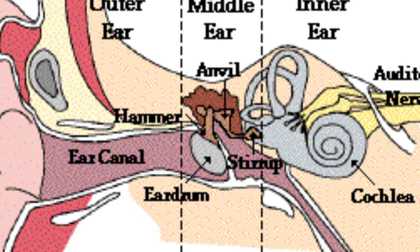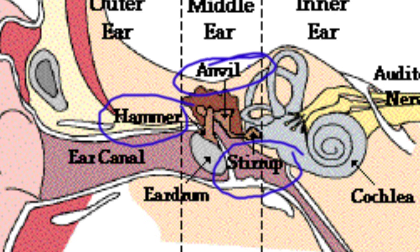The vibrating eardrum passes vibrations to the middle ear. The middle ear begins with the inner side of the eardrum, and the eardrum is attached to three bones: hammer, anvil, and stirrup. These bones are named according to their shapes and together are known as ossicles. The function of these three bones is to amplify the vibrations several times.